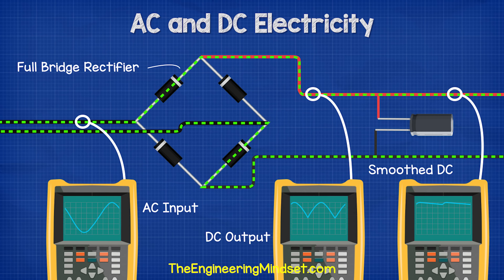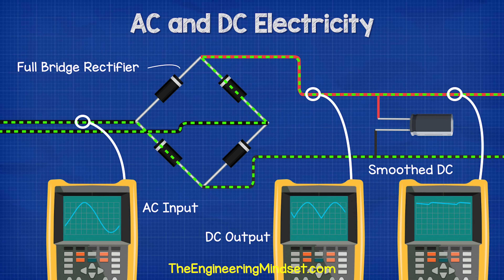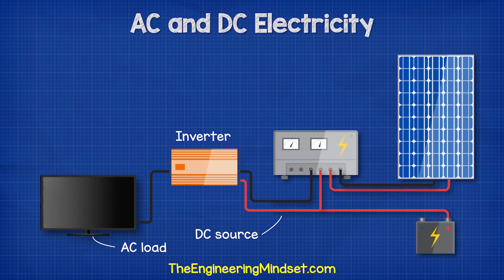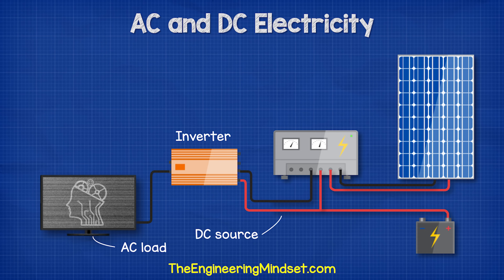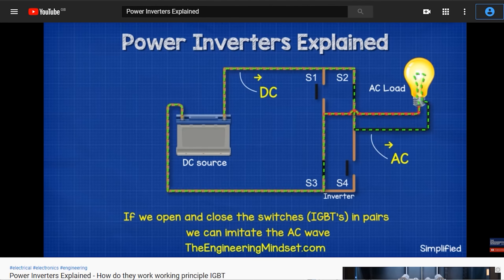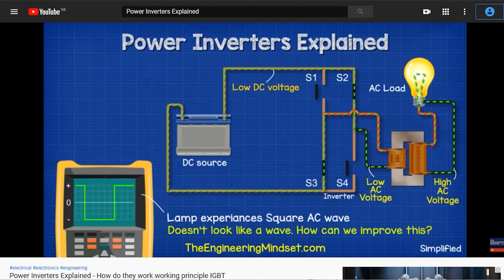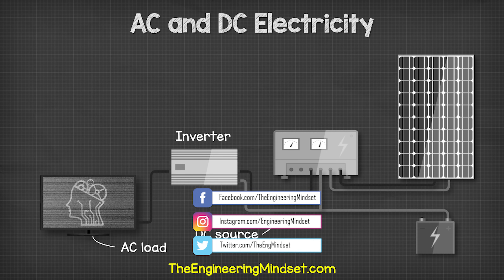We can convert AC to DC using a device known as a rectifier. This is extremely common in electronics. We can also convert DC to AC using an inverter, and this is used for example with solar power systems. We have covered power inverters in great detail previously — check that out, links can be found in the video description below.